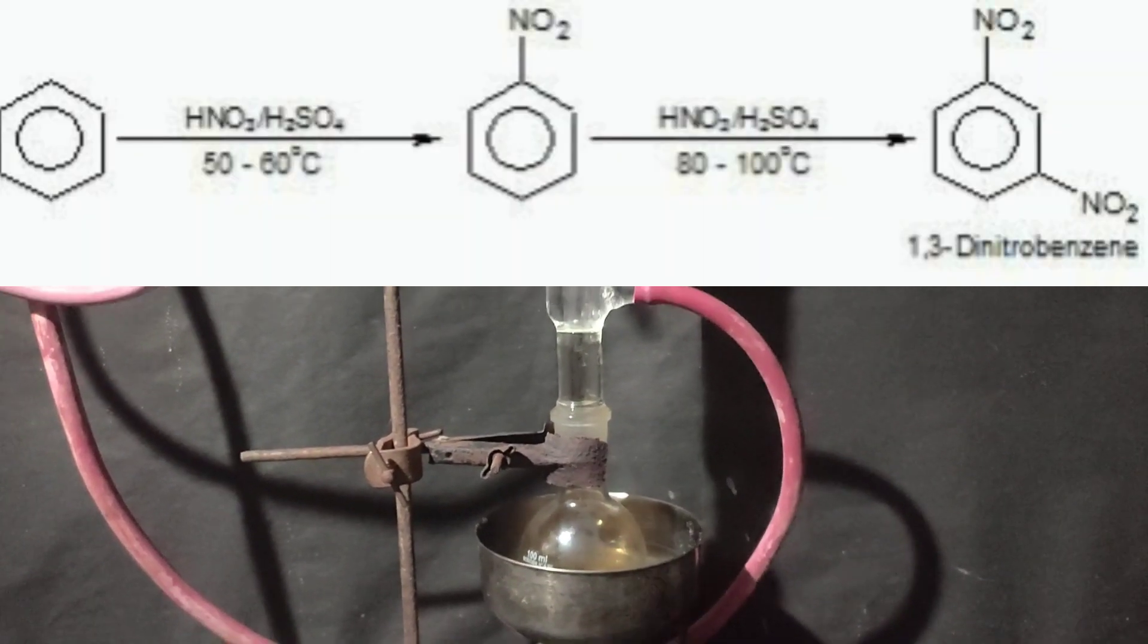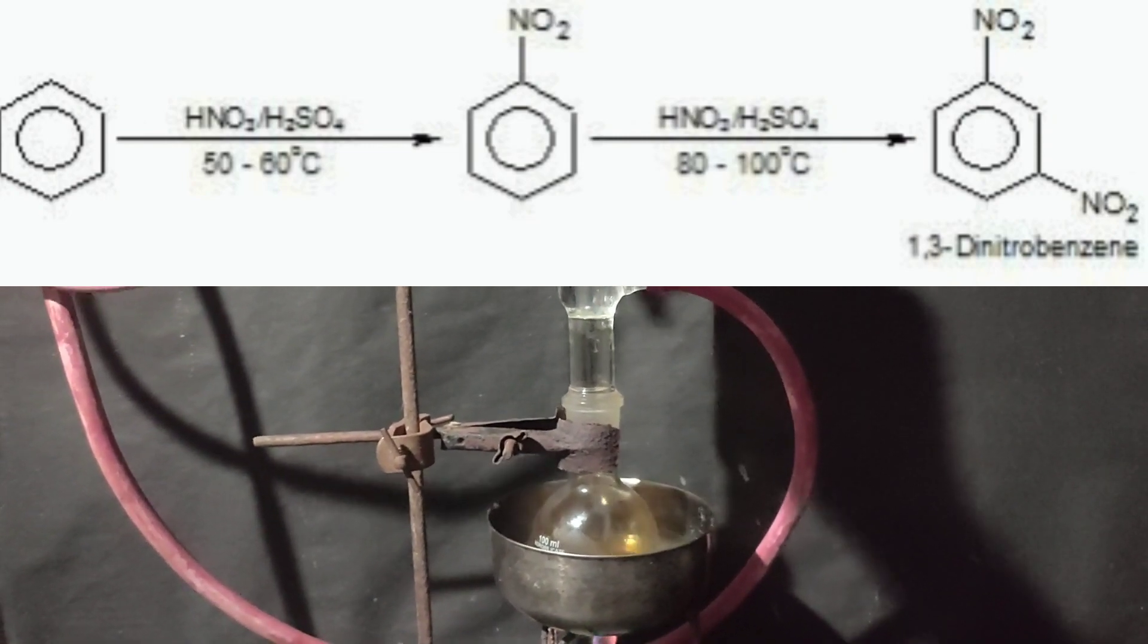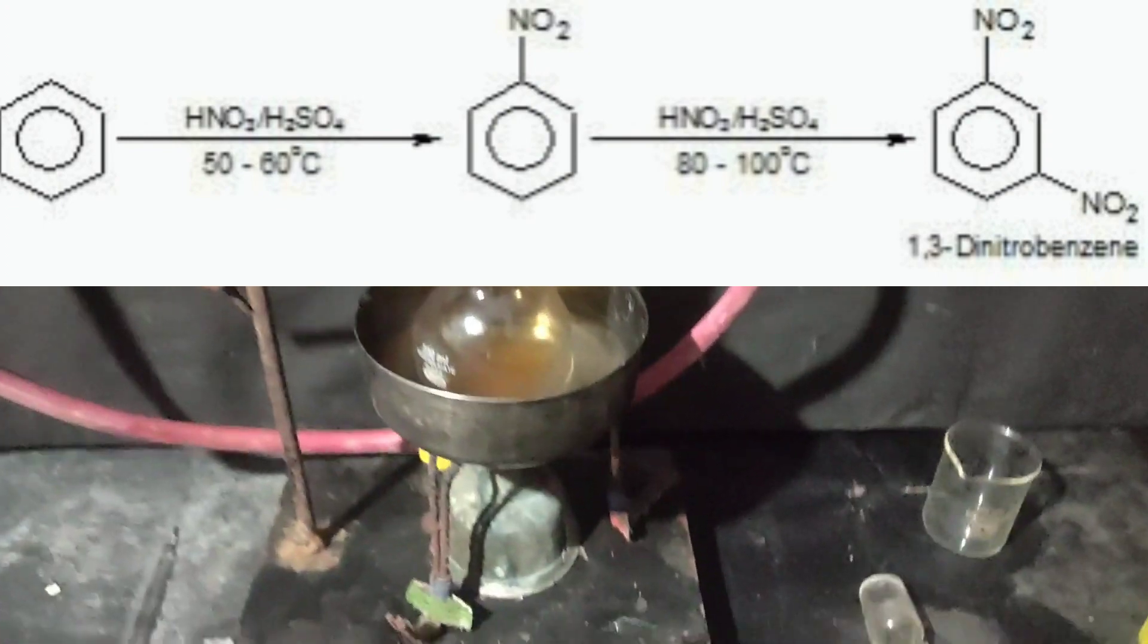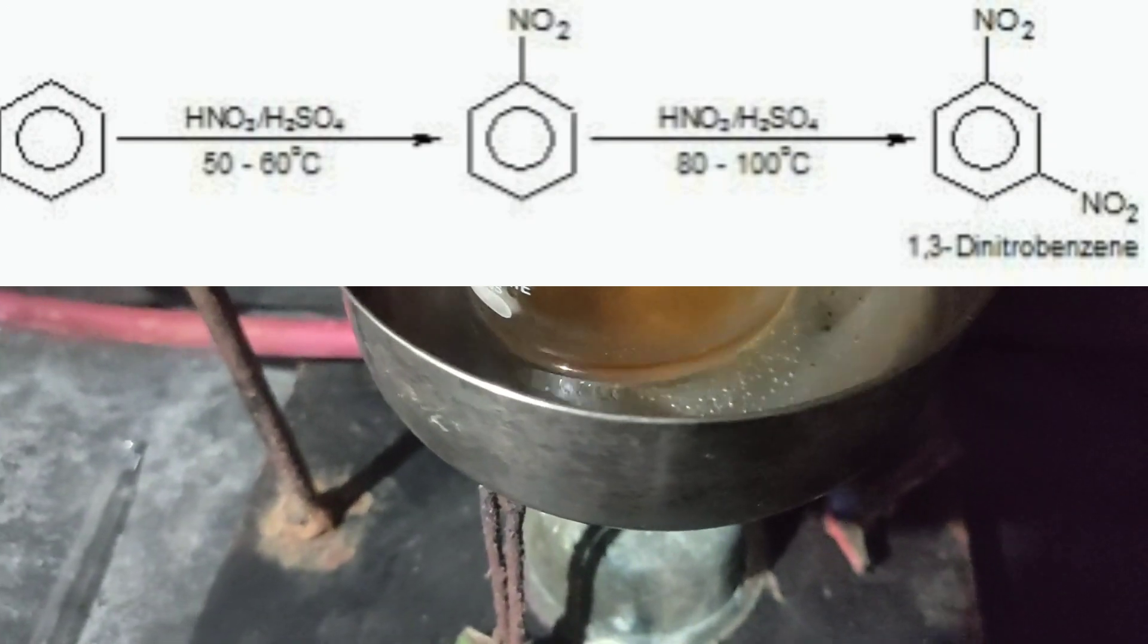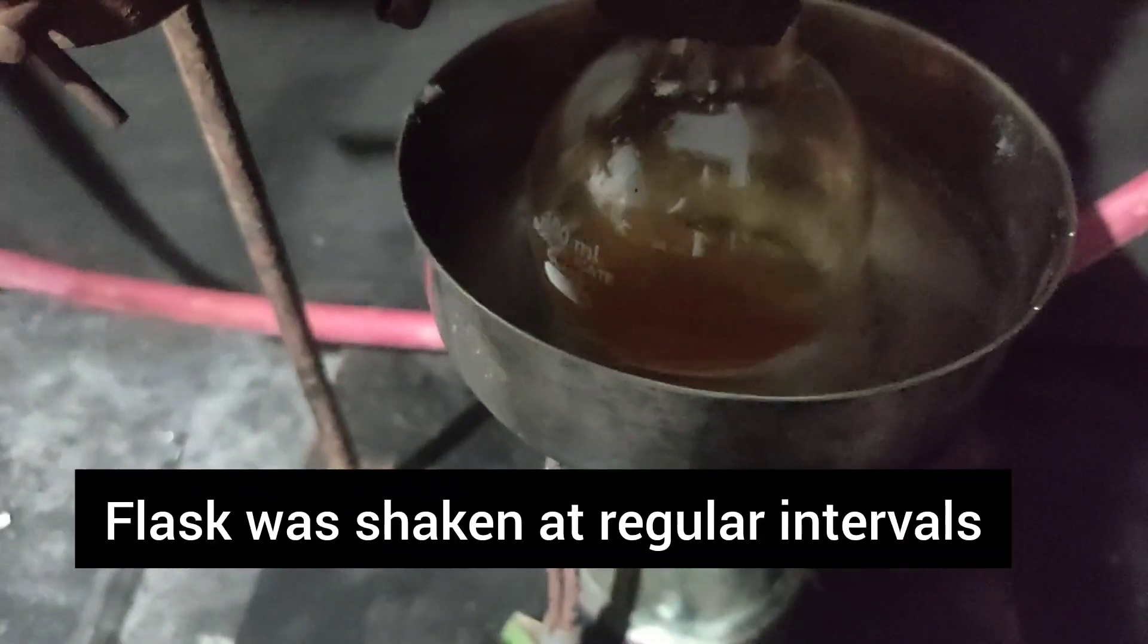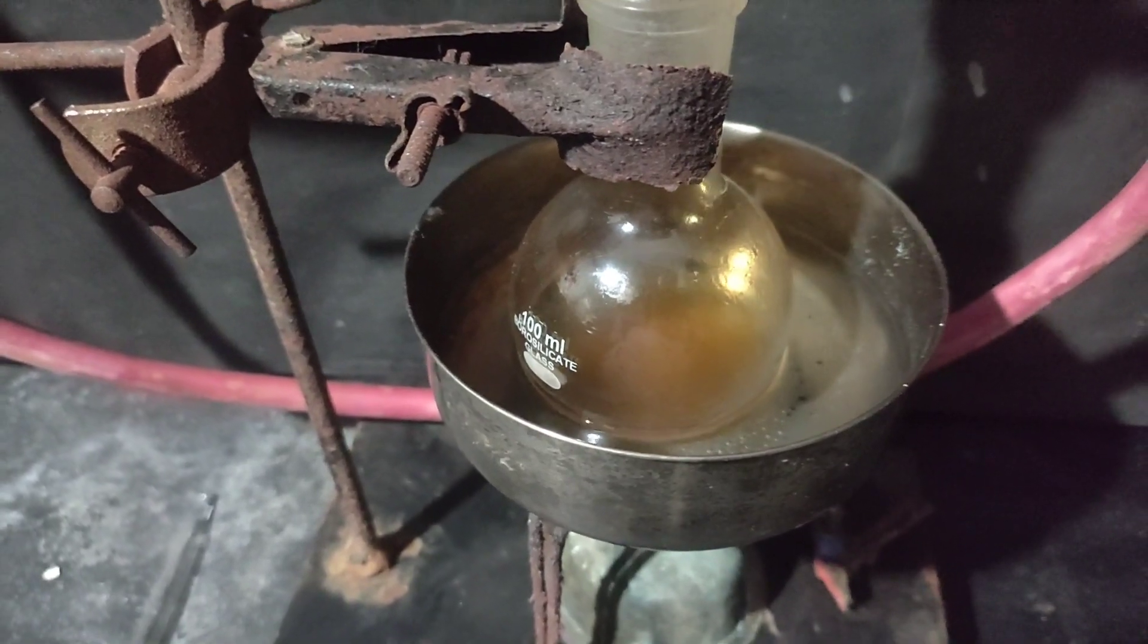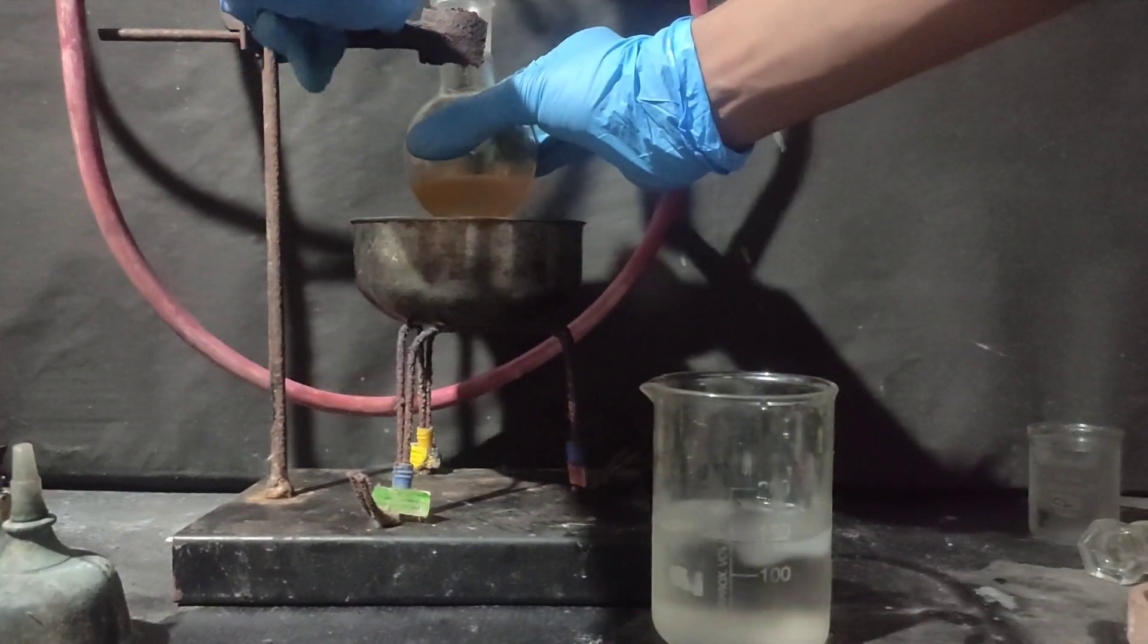What's happening here is, first, the benzene is getting nitrated to form nitrobenzene. This reaction occurs at 50 to 60 degrees Celsius. Then, at high temperatures, that is 90 to 100 degrees Celsius, the nitrobenzene starts getting nitrated at the meta position to form meta-dinitrobenzene.